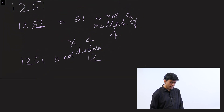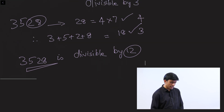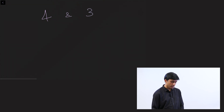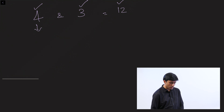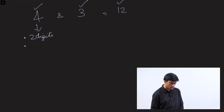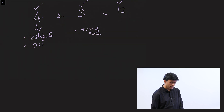Remember: to check if a number is divisible by 12, you need to see if it is divisible by 4 and divisible by 3. If it is divisible by both, then it is divisible by 12. To check divisibility by 4, look at the last two digits — they must be a multiple of 4 or 00. For 3, take the sum of the digits and see if the sum is a multiple of 3.